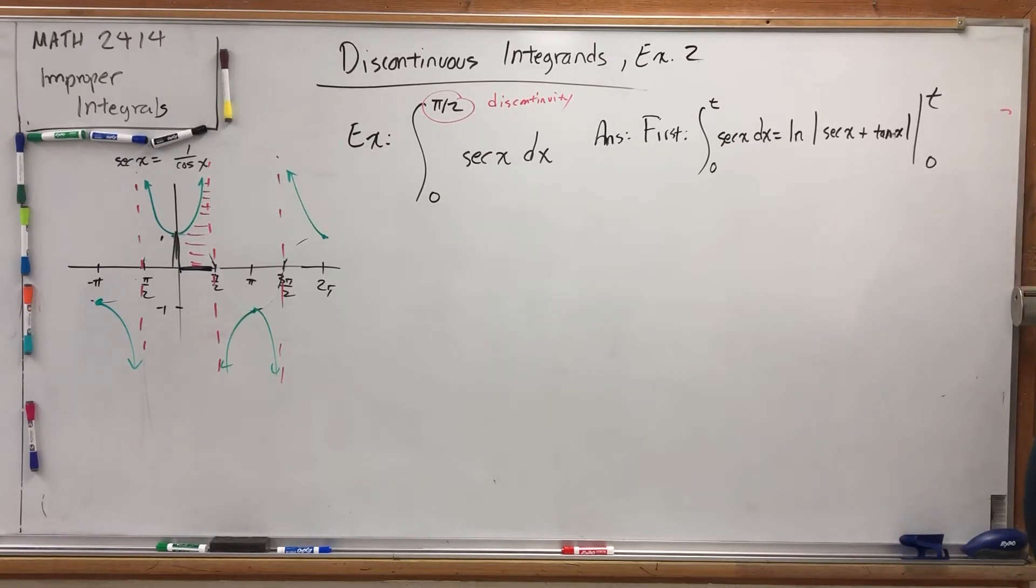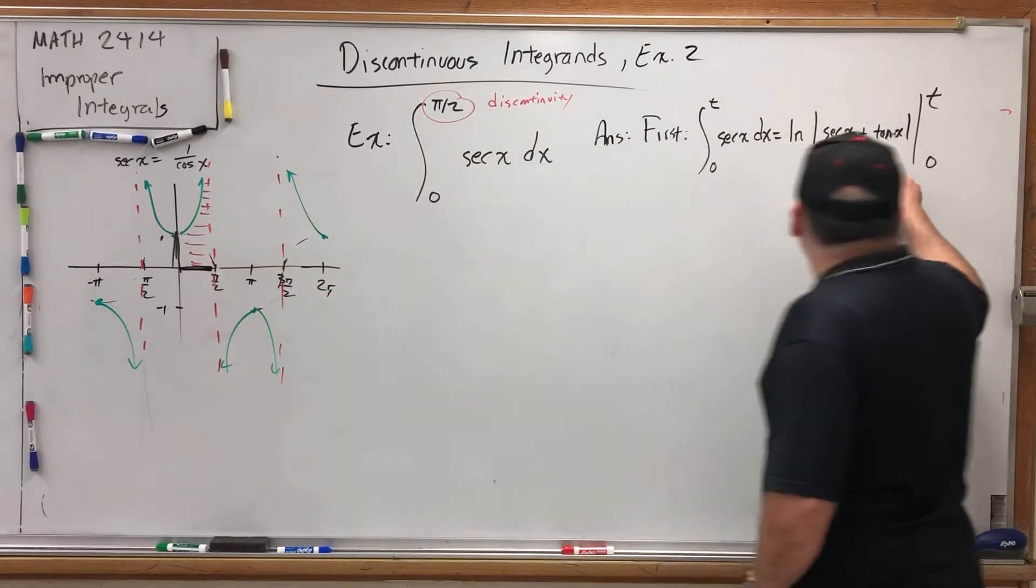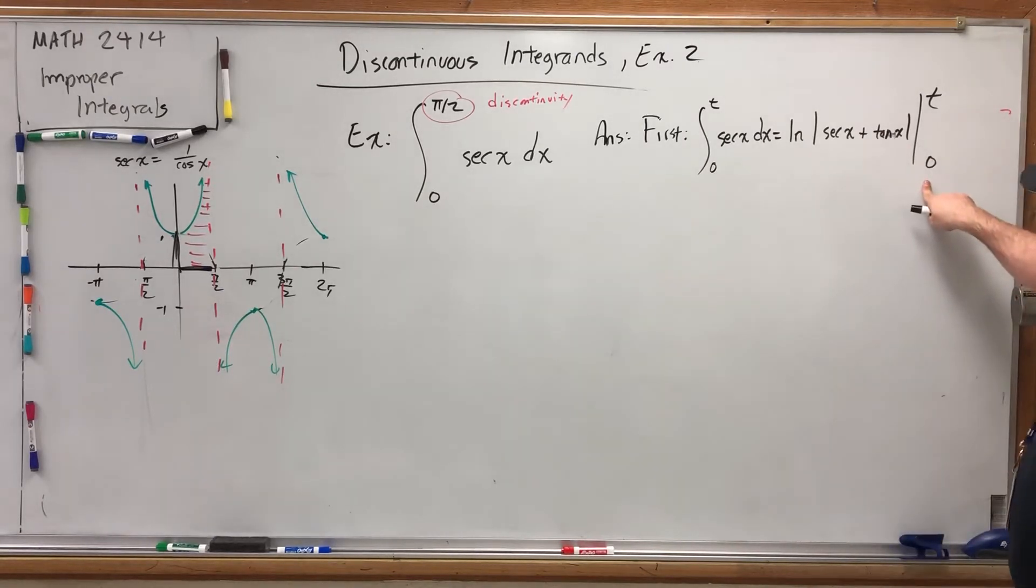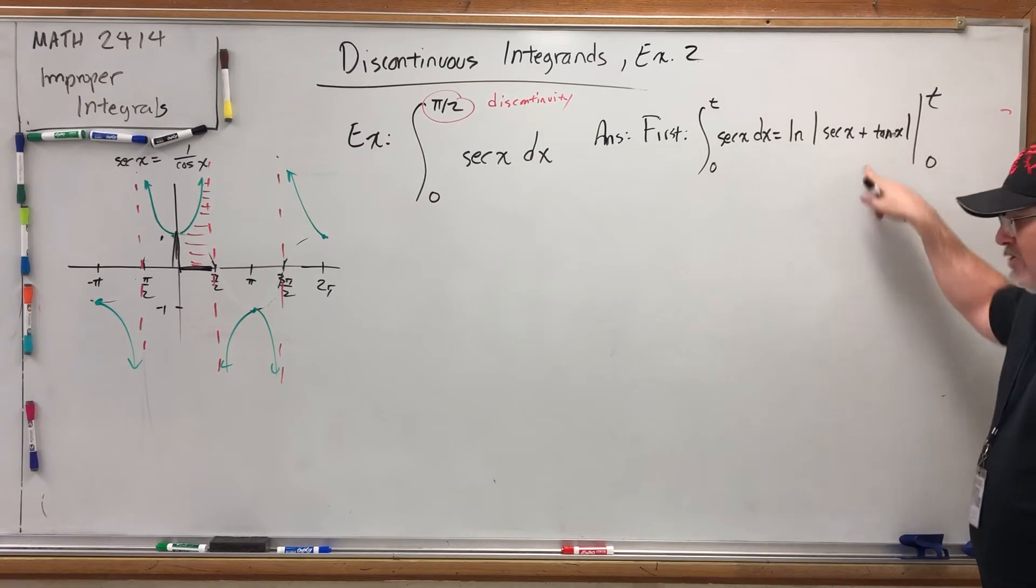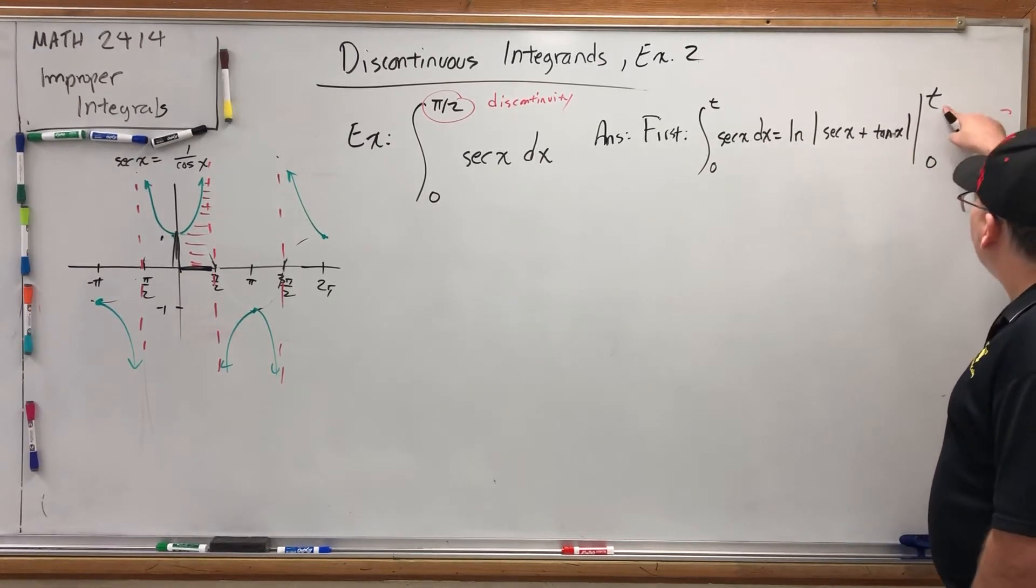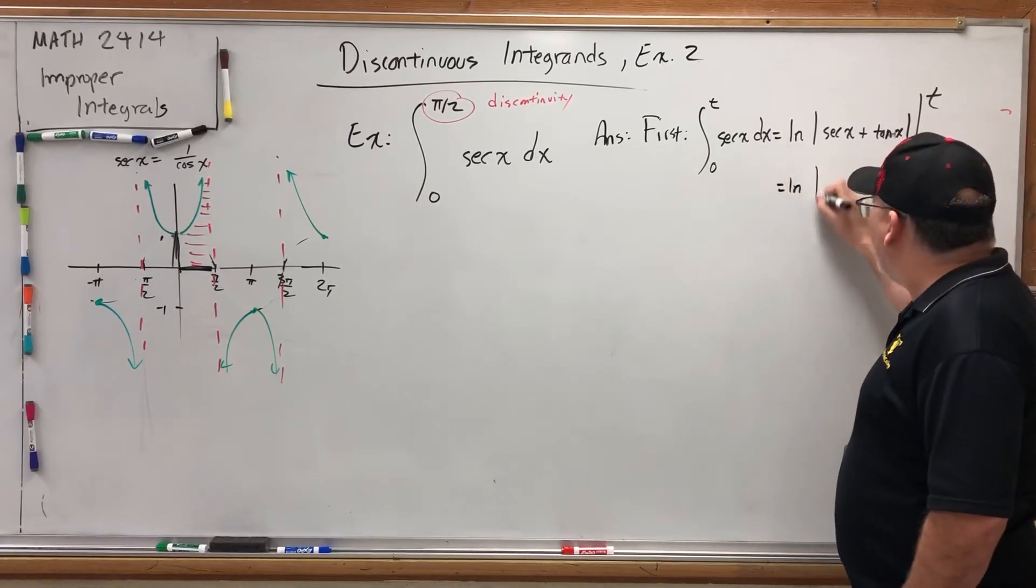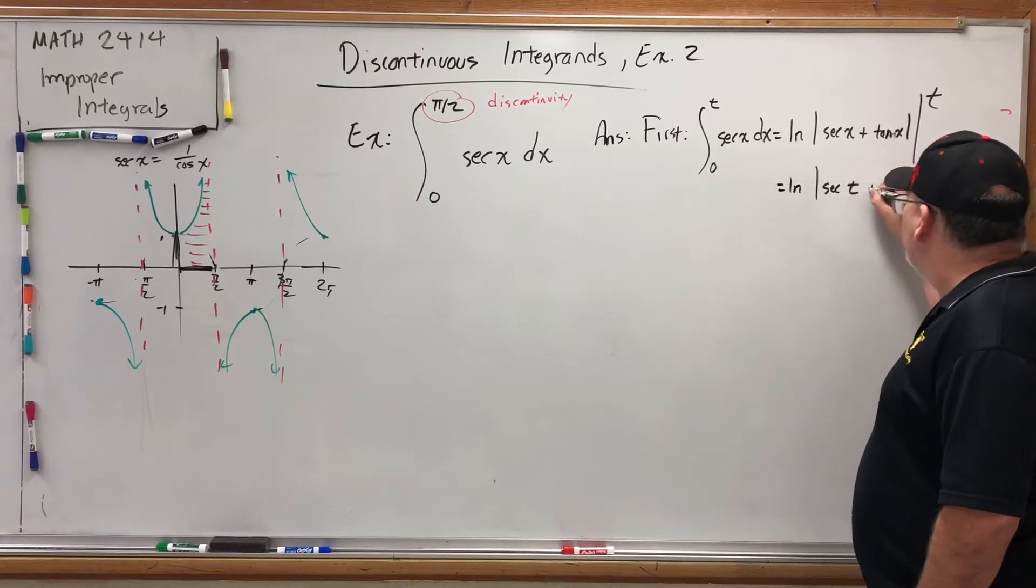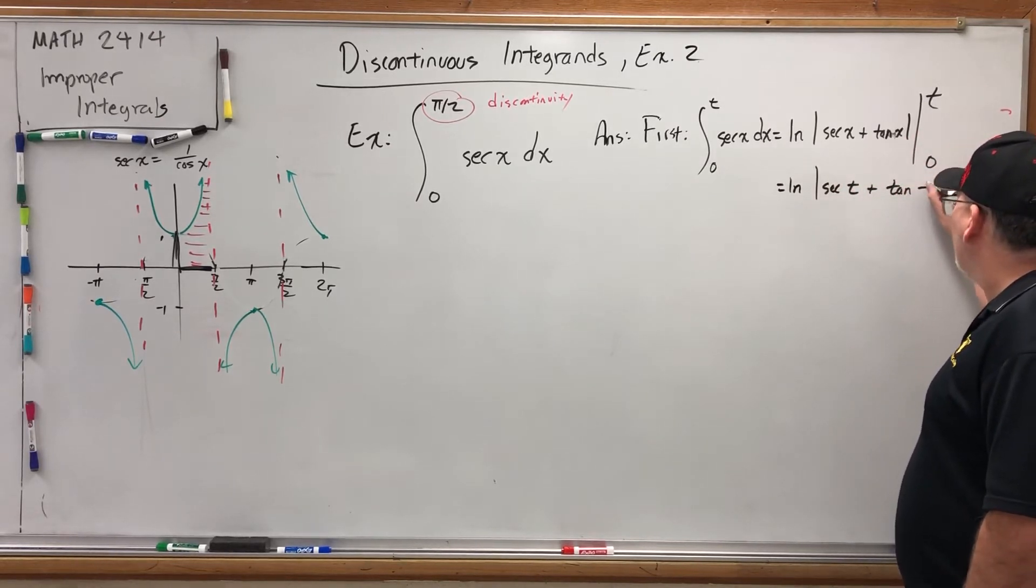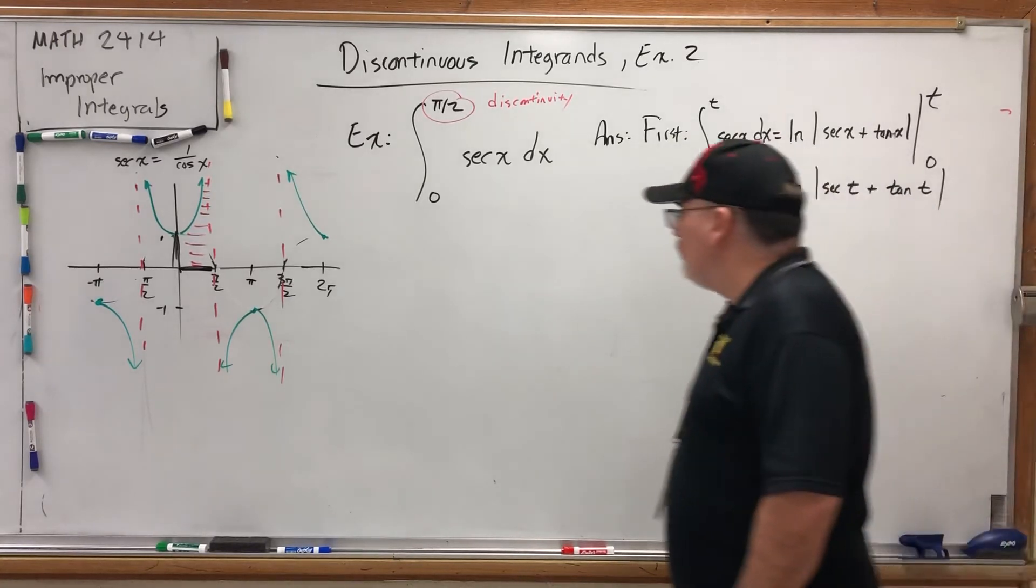From 0 to t. We'll put in the t. That won't be a problem. Let's just talk about the 0. Secant of 0 is 1, tangent of 0 is 0. So when I put in 0, I get 1 plus 0, which is 1. I get the natural log of 1, which is 0. So substitute this minus substitute that, but this is 0. So we just get natural log absolute value of secant of t plus tangent of t. So there's the first move of the improper integral process.